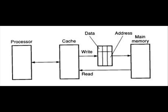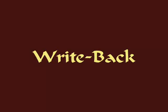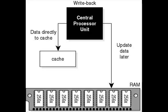The alternative to a write-through scheme is a scheme called write-back. In a write-back scheme, when a write occurs, the new value is written only to the block in the cache. Write-back schemes can improve performance, especially when processors can generate writes as fast or faster than the writes can be handled by main memory. A write-back scheme is, however, more complex to implement than write-through.